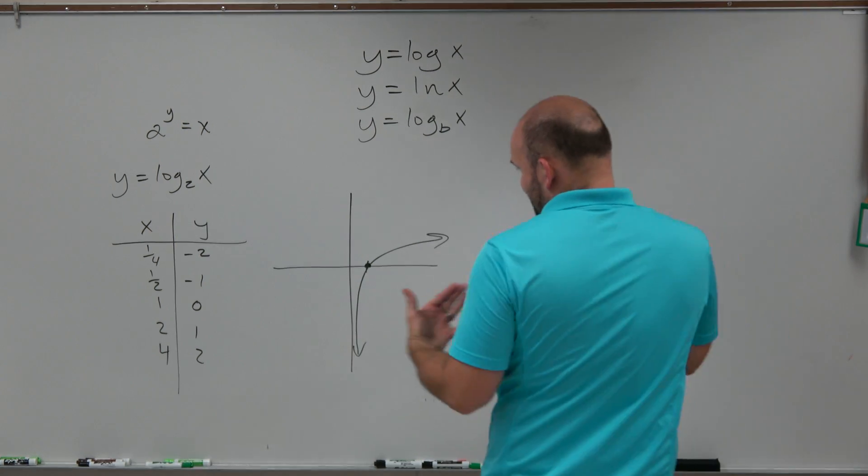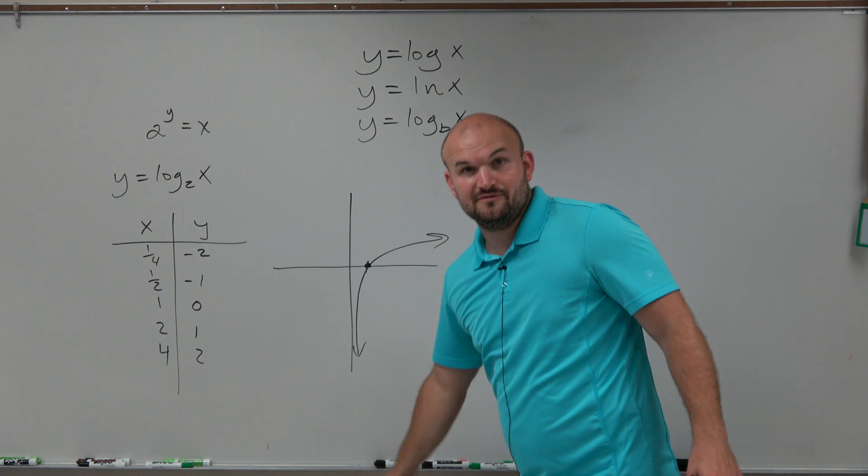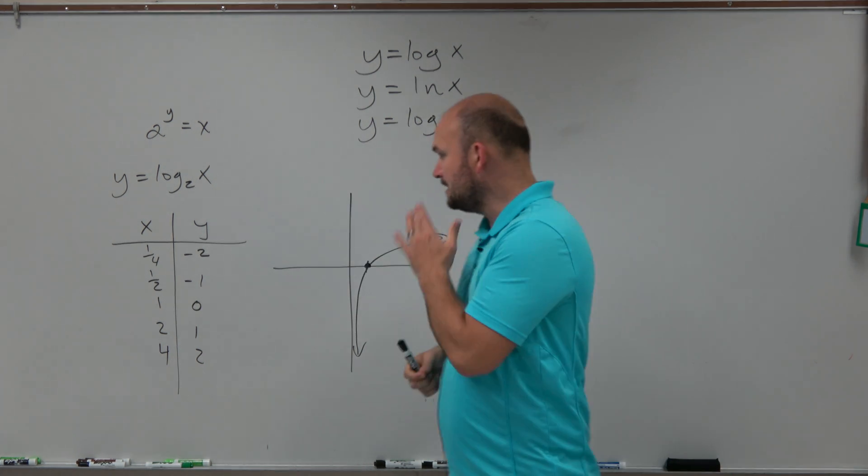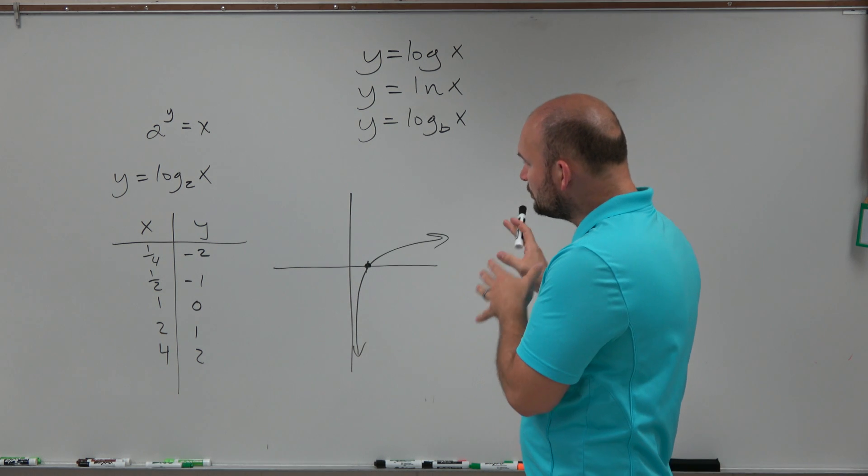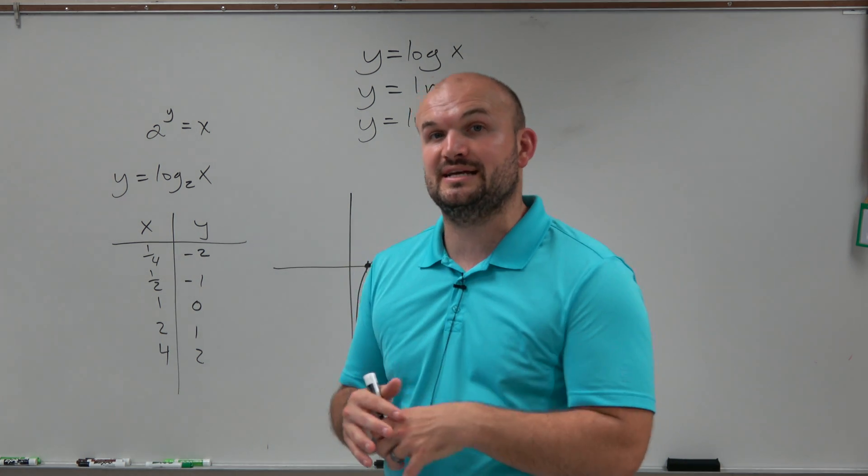So you can see, as far as a domain and range perspective, you can see that the range is from negative infinity to infinity, and the domain is from 0 to infinity. Now, when we're looking at this, how are we going to apply transformations? What happens when things start changing?